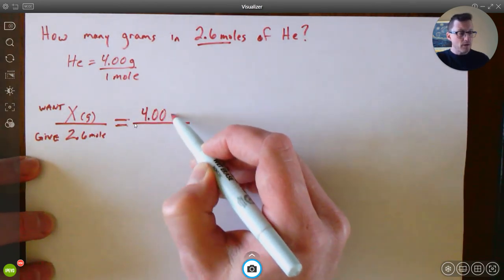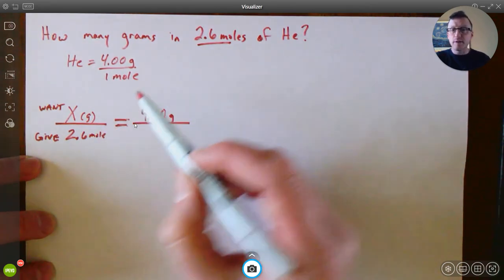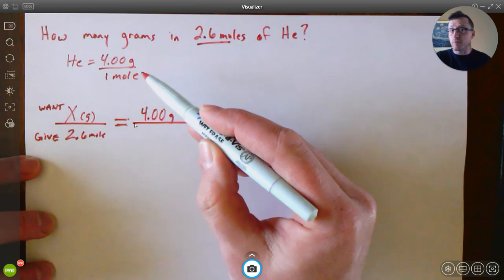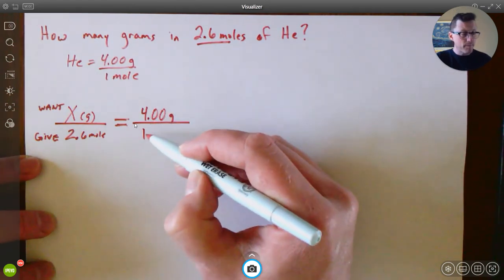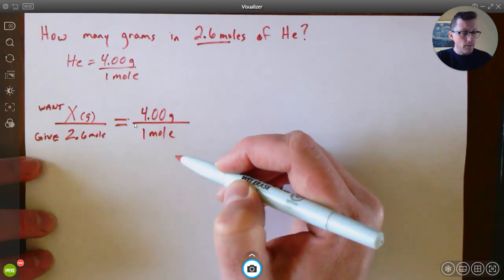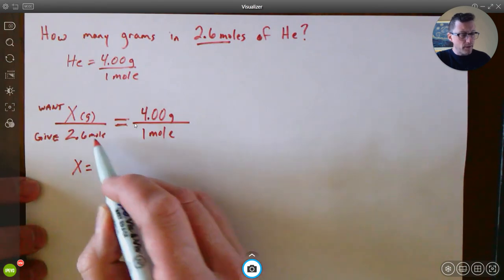If this had moles on top and grams on the bottom, then I can actually flip this fraction around so I put the 4 grams on the bottom and the 1 mole on top. But in this case it matches up with what we have. Okay, then you do some cross multiplying there.